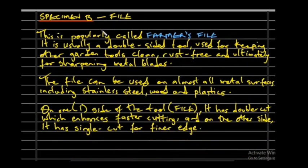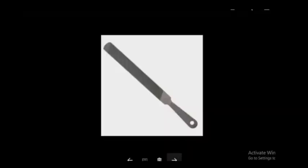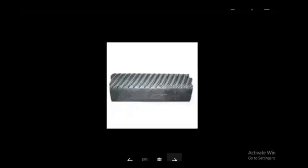Specimen B is the file, popularly called the farmer's file. It is usually a double-sided tool used for keeping cutting tools clean, rust-free, and ultimately sharp. It is used for sharpening metal blades of instruments like cutlasses and hoes. The file can be used on almost all metal surfaces including stainless steel, wood, and plastics. One side has double cuts for faster cutting, while the other side has single cuts for fine edges.